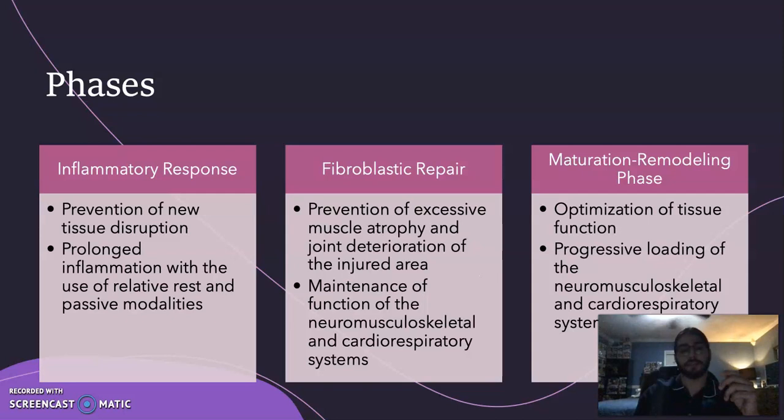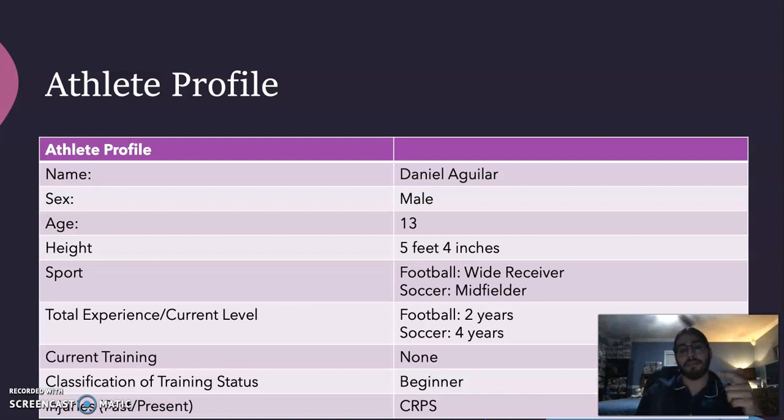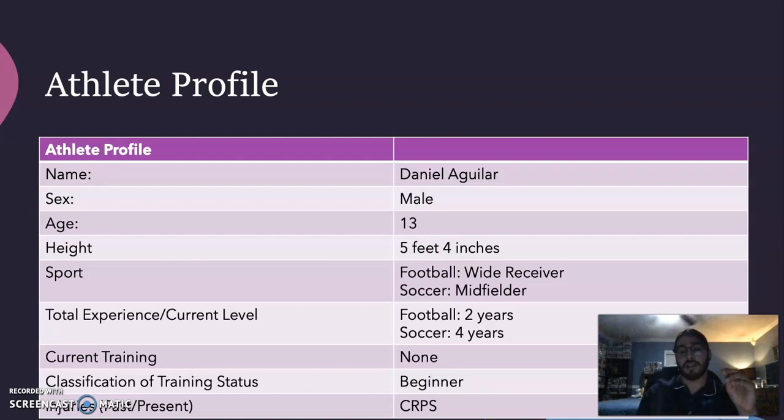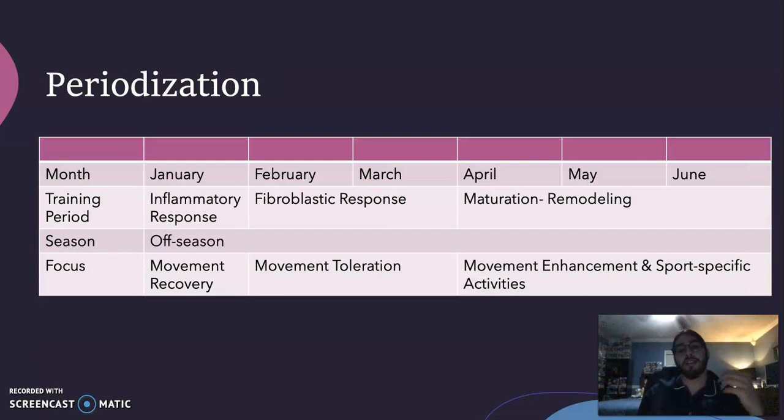The athlete profile: Daniel Aguilar, male, 13 years old, 5 feet 5.4 inches. He is a football and soccer player — a wide receiver in football and a midfielder in soccer. He has two years of prior experience in football and four years in soccer. His current training status is none; he has not been training for a couple of weeks and is classified as a beginner.